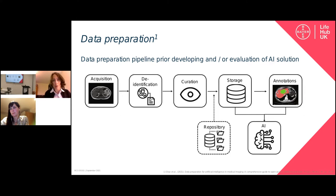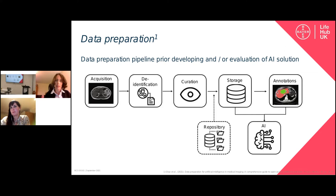Briefly about the curation: the imaging data is acquired in DICOM format, but this format is not really practical for developing, training and testing machine learning algorithms. It's very heavy, it contains a lot of information that is not useful, and it also fragments a lot of the data. For example, the data comes as 2D slices, while in medical imaging we know it is a 3D dataset. There are freely available tools that allow you to change the format to more usable ones.